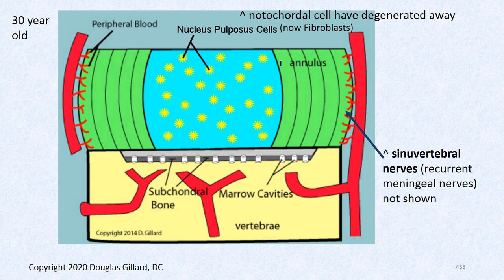In this cartoon: the nucleus pulposus cells are shown, and blood vessels and nerves are only in the outside layer of the annulus. Here's an annular tear — nucleus pulposus cells have leaked out causing wicked inflammation in the outer annulus region, which causes the discogenic pain.